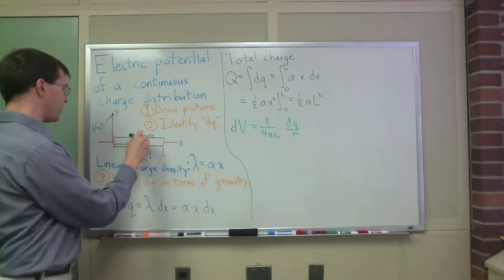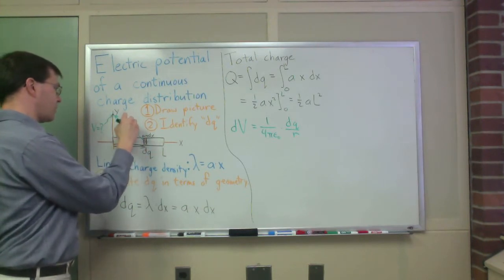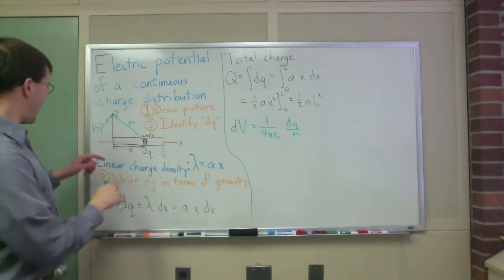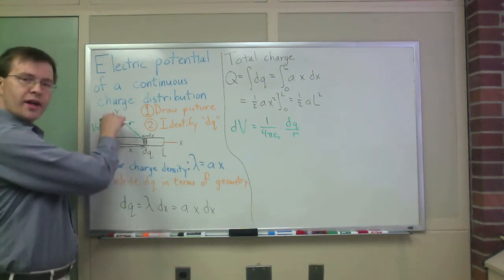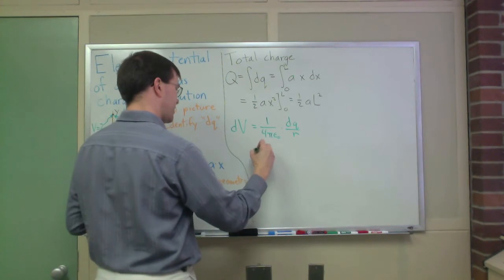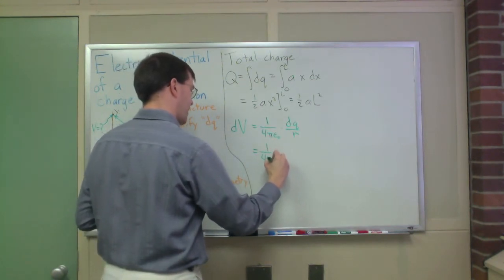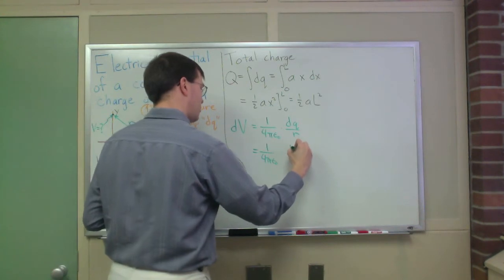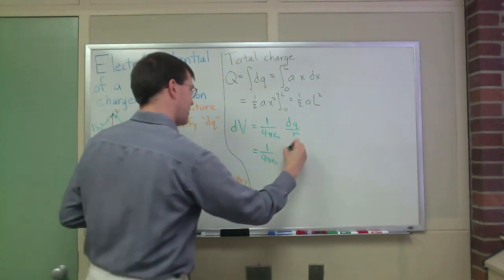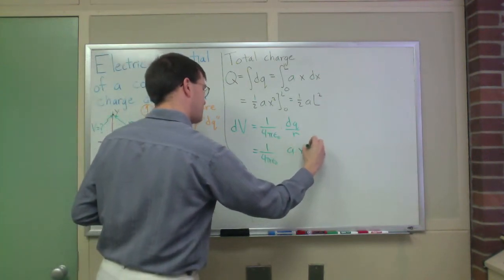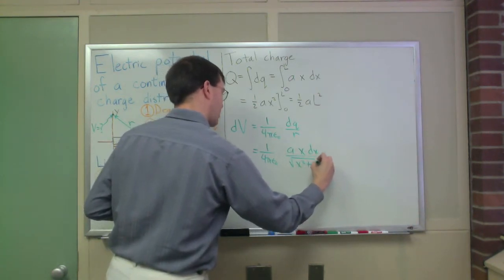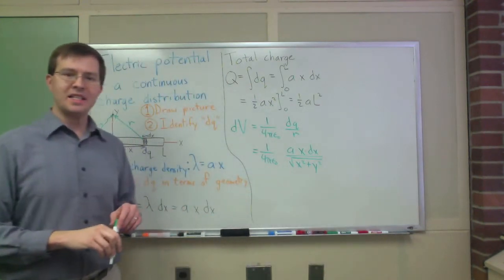That raises a question. What is r for us in this picture of ours? r goes from the source point to the measurement point. I can see that. This is just a right triangle. X squared is this length, y squared is that length. So this equals the constant one over four pi epsilon naught times dq. I know what dq is even. dq is a times x times dx divided by the square root of x squared plus y squared. There we go. That's my dv.